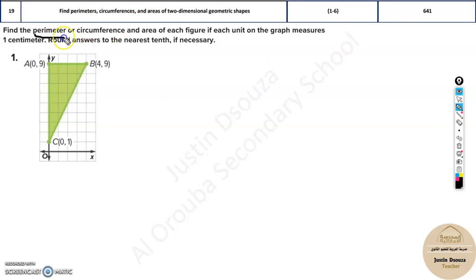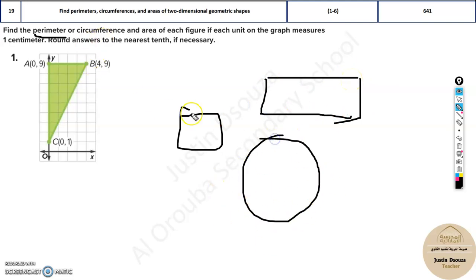Perimeter is for objects which are, say, triangle, rectangle—which have edges, you know, ends like lines. Circumference is for something that is round. A circle has a circumference, but the concept is the same. Circumference means the outer portion; perimeter means the same thing, the outer portion.